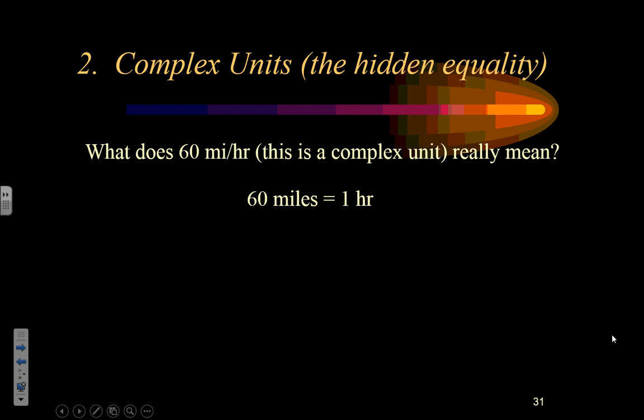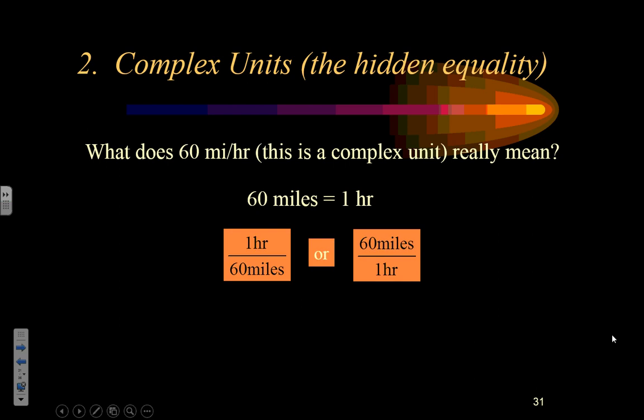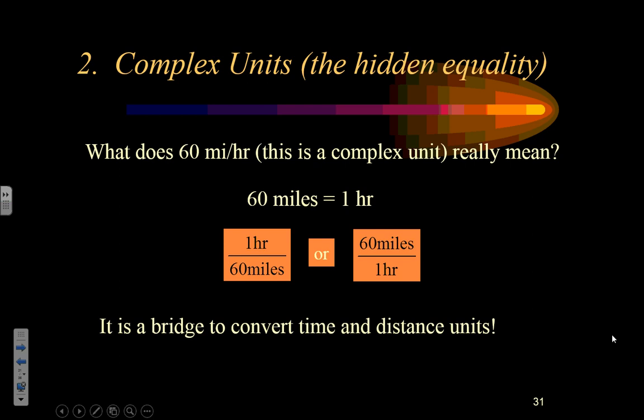Whenever you see a complex unit like 60 miles per hour, cross it off and write it as an equality — it's going to make it easier to see how you'll use it in the problem. Remember, equalities are actually conversion factors; they can be written as ratios in one of two ways. On one side we convert from miles to hours, on the other from hours to miles. It's a bridge between two different fundamental types of unit — distance and time.